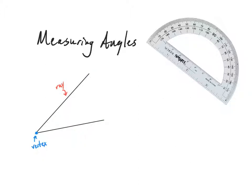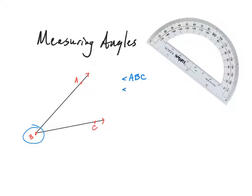Now we're going to give this angle a name. The way we name angles is by points that are on the angle. I'm going to call this point A, this point B, and this point C. There are three ways to name this angle: I always include my vertex B in the name and it will always be the middle letter. So I can call it angle ABC, angle CBA, or simply angle B — all referring to this gap between my two rays.